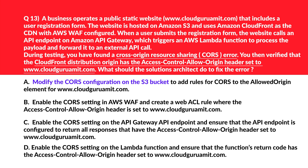Let's look at the next question. Option A: modify the CORS configuration on the S3 bucket. CORS stands for Cross-Origin Resource Sharing. The CORS error is not from accessing the S3 bucket — the application is making a request to the API Gateway. Modifying S3 CORS would have no impact, so we reject this. Option B: enable the CORS setting in AWS Web Application Firewall. AWS WAF does not have a CORS setting; CORS is handled at the application level, not the firewall level — reject this.